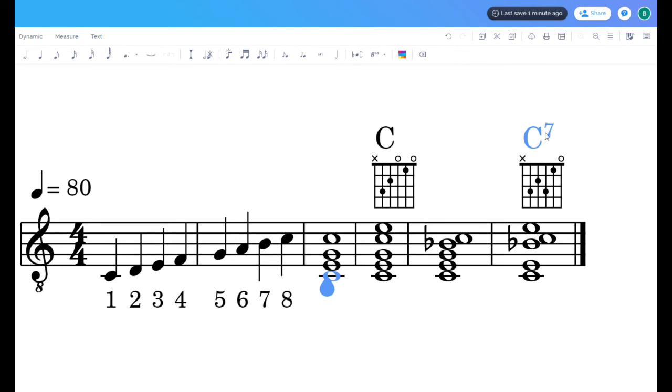Now, if we add the seventh note, what we're going to do is we're going to take the seventh note of that scale and we're going to add it too. So in this case, it's a B, and we add the B.